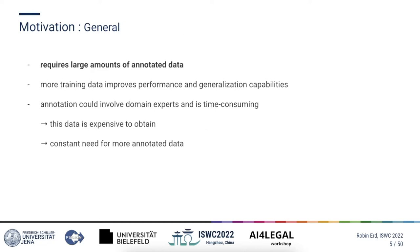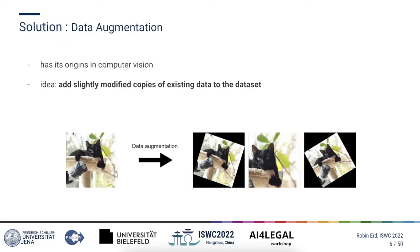The named entity recognition task is usually solved by supervised machine learning models. As most of you probably know, supervised machine learning models require a large amount of training data. This data has to be of high quality, as diverse as possible, and also represent data that the system will encounter during its application. Supplying models with more such training data improves overall performance and generalization capabilities. Acquiring this training data is expensive because the annotation could involve domain experts and is a time-consuming process. Therefore there is a constant need for more annotated data, especially domain-specific data. One solution to this problem is generating more new training data automatically.